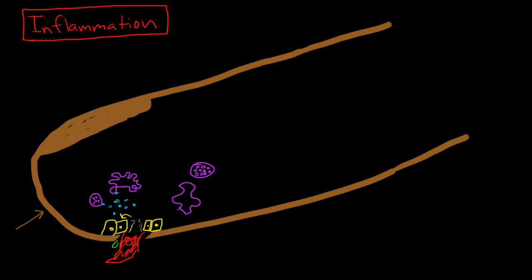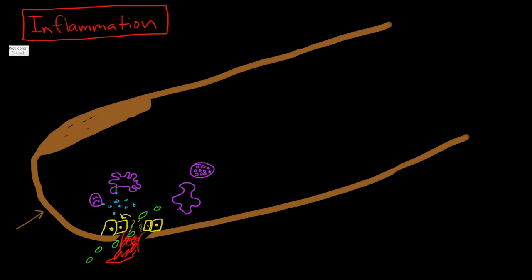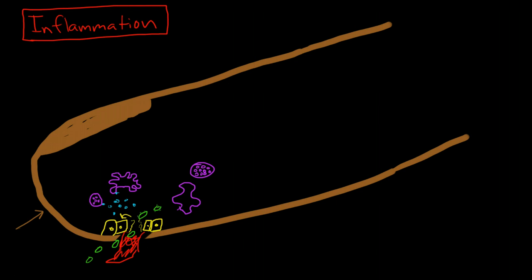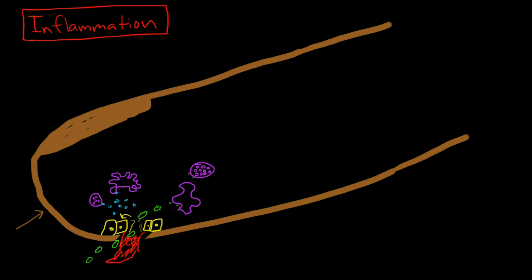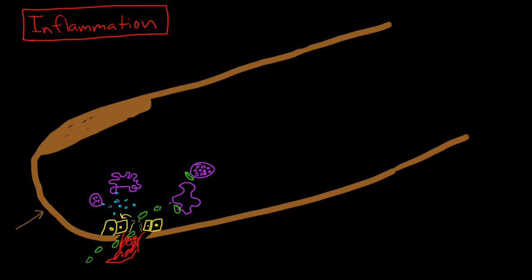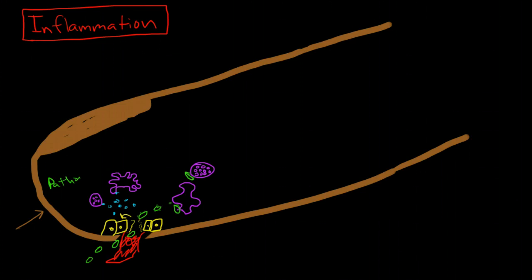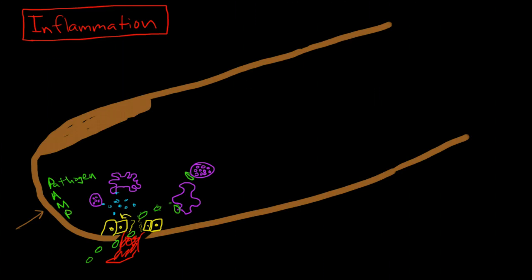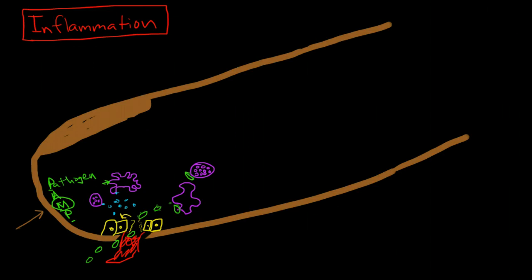Inflammation can also be stimulated by recognizing proteins from bacteria that managed to make their way into the tissues. These bacteria have little proteins studded on them, and those proteins will bind with the cells. Now the name for these proteins that are binding with the mast cells or the macrophages are called pathogen associated molecular patterns.